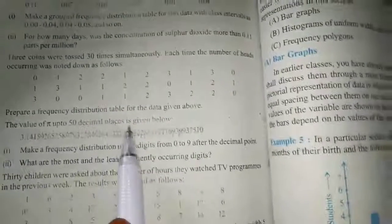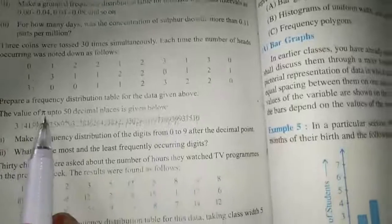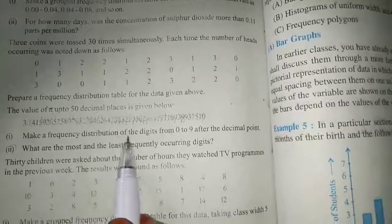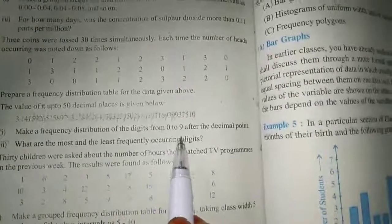Question 7, see here. The value of pi up to 50 decimal places is given below. Make a frequency distribution of the digits from 0 to 9.